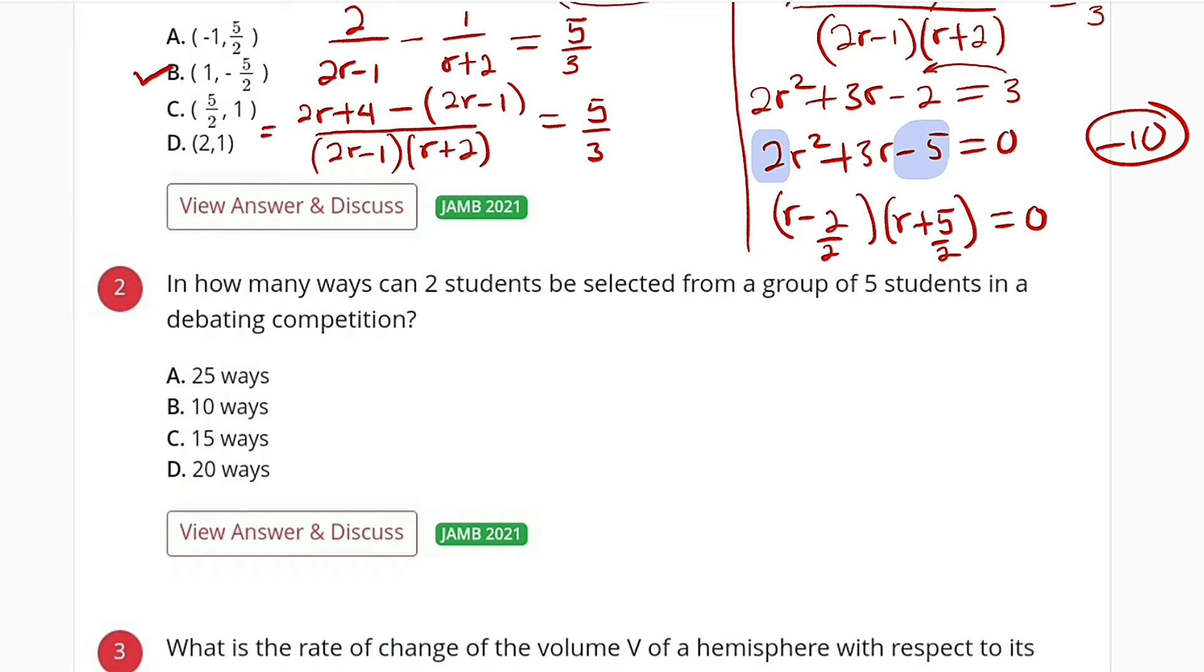Question number two asks: in how many ways can two students be selected from a group of five students? This is a combination problem: five combination two, written as 5C2, which is equal to...